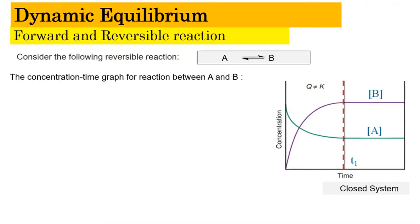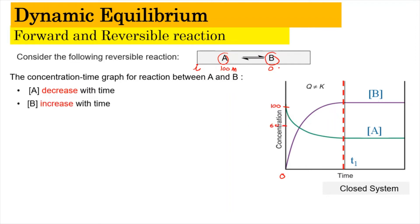Now, consider the following reversible reaction: reactant A converting to product B. Looking at the concentration-time graph, at time zero we have a certain amount of A — let's say 100 molar — but the concentration of B, the product, is zero. As time goes by, the concentration of A will start to decrease, maybe from 100 down to 60, while the concentration of B will increase from zero, perhaps up to 40 or 60.